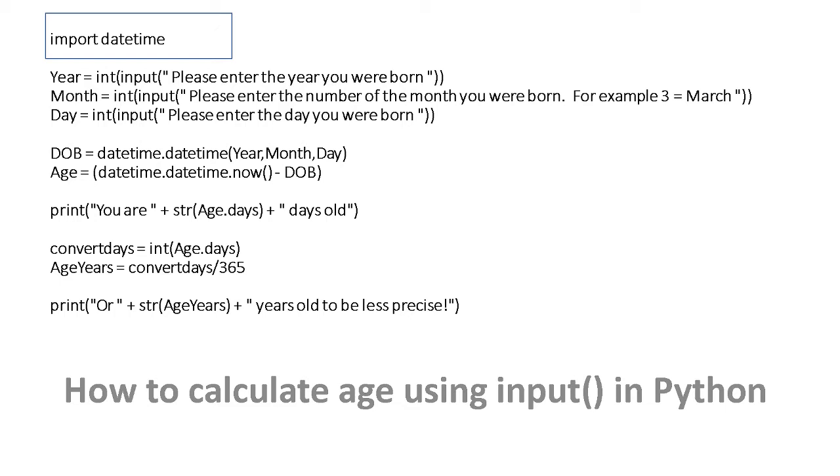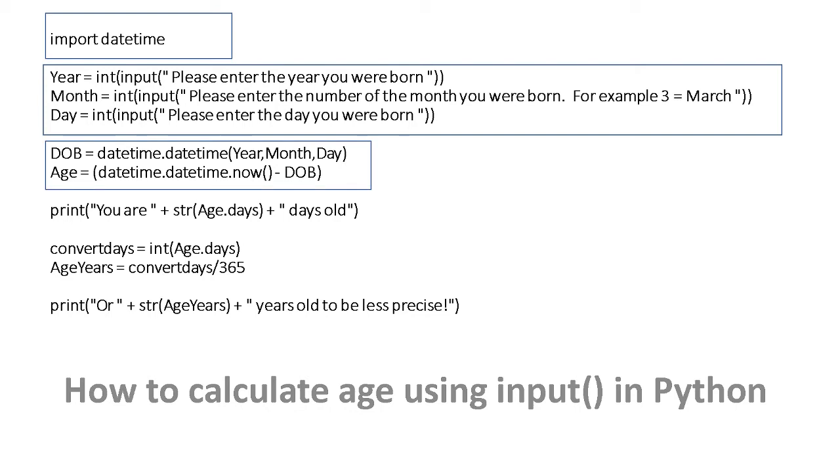Okay, so first thing like any Python program we need to declare our variables. So I've declared a variable year. I've converted the input that the user puts in into an integer. Now that's important because the datetime function needs those values as integers. Once you've got the year, the month, and the date from the user converted into an integer, the next thing you do is hold that and convert it into a datetime format in another variable.